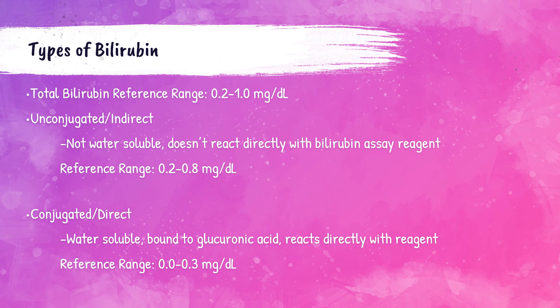The total bilirubin reference range is 0.2 to 1.0 milligrams per deciliter — that is the range for a normal patient. Conjugated or direct bilirubin is also measured directly by the analyzer because it is water soluble and reacts directly with the bilirubin assay reagent. The normal reference range for conjugated or direct bilirubin is 0 to 0.2 milligrams per deciliter.